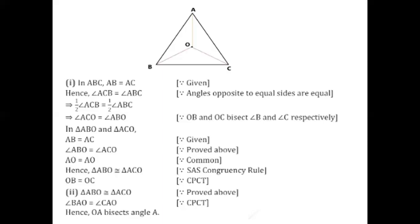Now, what is half of angle ACB? I can write it as angle ACO or angle BCO, but I will write it as angle ACO. So half of ACB is written as angle ACO. Likewise, what can I mention as half of ABC? I can mention half of ABC as angle ABO. Why? Because OB and OC bisect angle B and angle C respectively — this is given as part of the question.